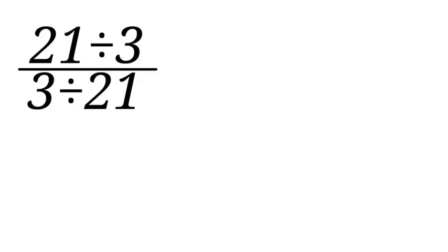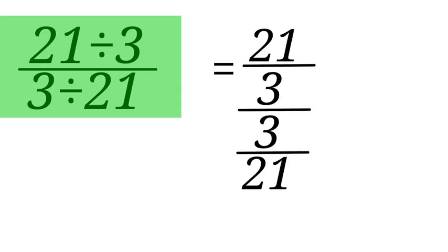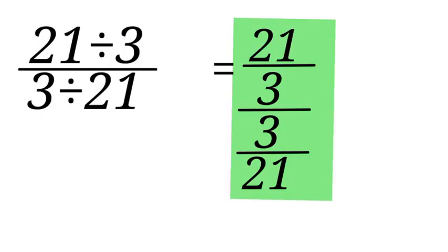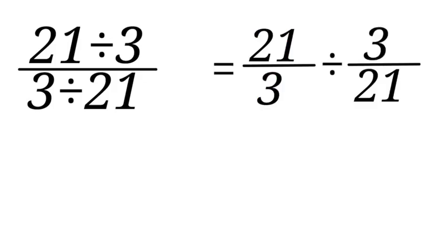Now the second method. 21 divided by 3 all over 3 divided by 21. So this expression can also be written as 21 over 3 divided by 3 over 21 in this format.